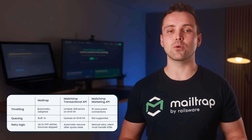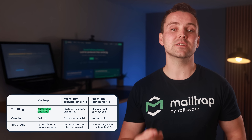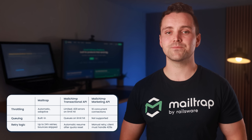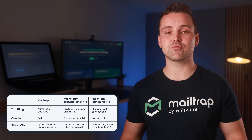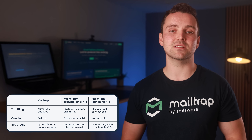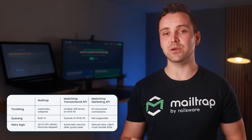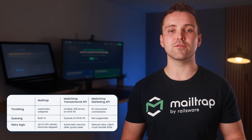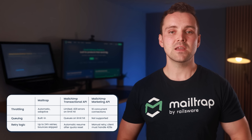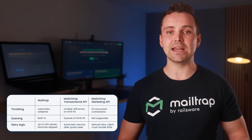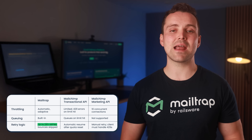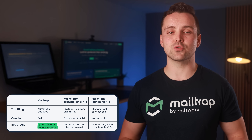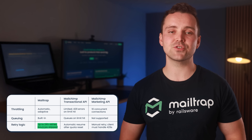Here's how MailTrap and MailChimp stack up behind the scenes. MailTrap handles throttling automatically using adaptive, system-level controls. You can also request domain-specific throttling if you need more flexibility. Queuing is built-in — MailTrap can manage it for you, or you can control the flow yourself. If a message can't be delivered, it's retried for up to 24 hours, with hard bounces dropped immediately to protect your sender reputation.